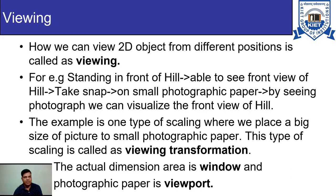One example is a type of scaling where we place a big picture onto a small photographic paper. Initially whatever we are seeing is the picture on the world coordinates, and the portion we want to display is placed on the window. After that, we map that window onto the device coordinate, which is the viewport. This type of scaling is called viewing transformation — the actual dimension area is the window and the photographic paper is the viewport.